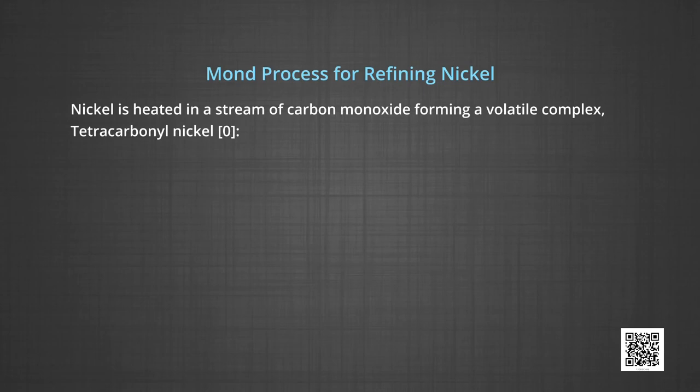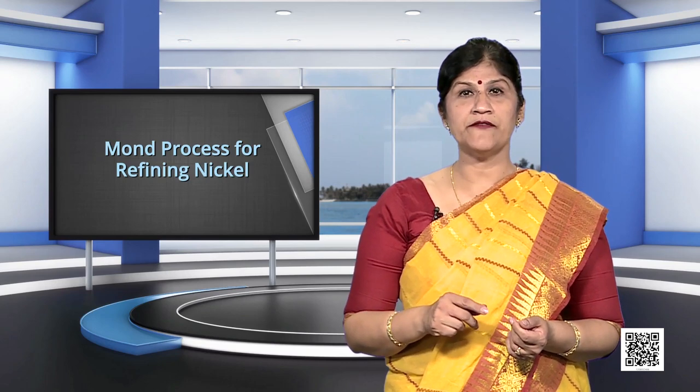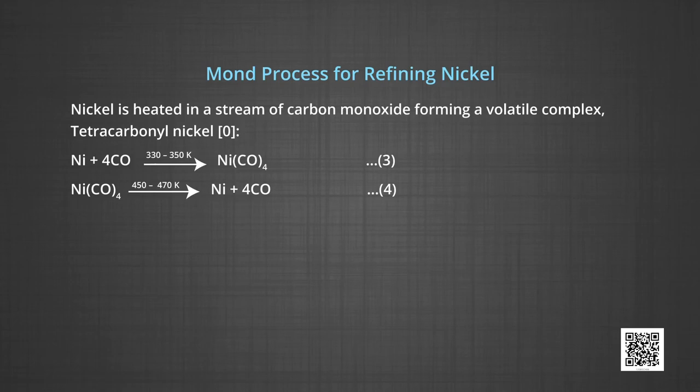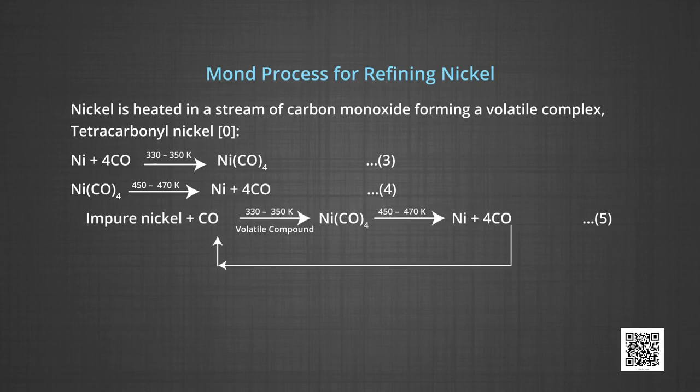Mond's process for refining of nickel. In this process, nickel is heated in a stream of carbon monoxide forming a volatile complex nickel tetracarbonyl. So, nickel plus carbon monoxide when heated at 330 Kelvin to 350 Kelvin form tetracarbonyl nickel. The carbonyl is subjected to higher temperature, so that it is decomposed giving the pure metal. Tetracarbonyl nickel when heated to 450 to 470 Kelvin decomposes to give nickel and carbon monoxide. The reactions of Mond's process as discussed can be seen in the flow chart like the impure nickel reacts with carbon monoxide to form tetracarbonyl nickel which is further decomposed to form nickel and carbon monoxide.